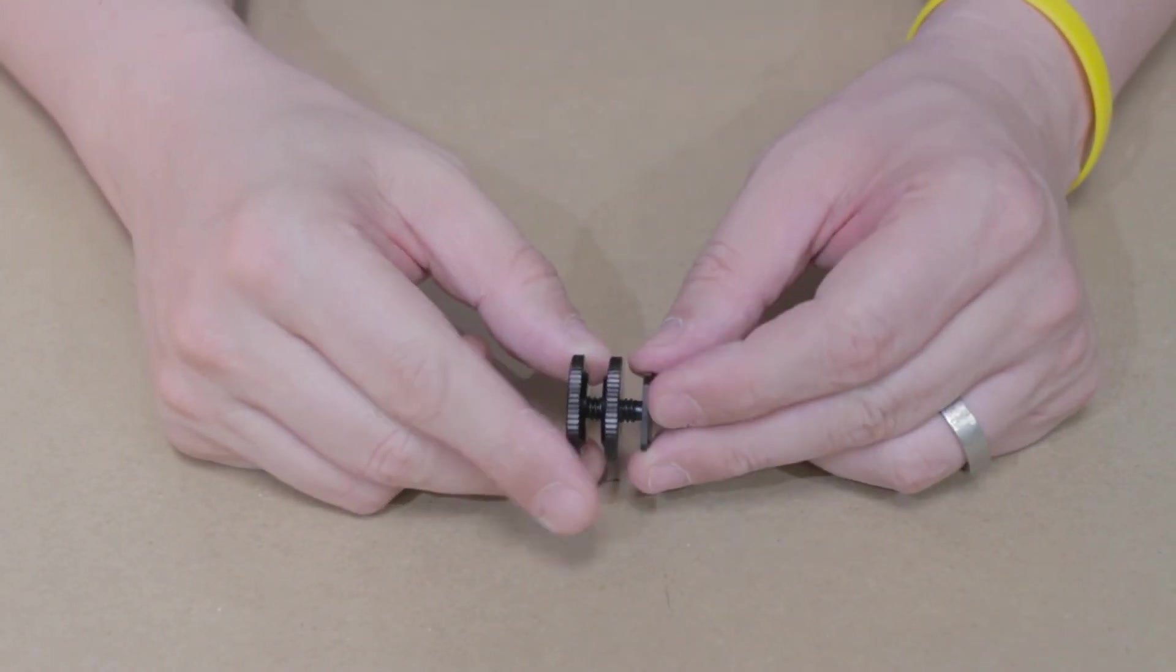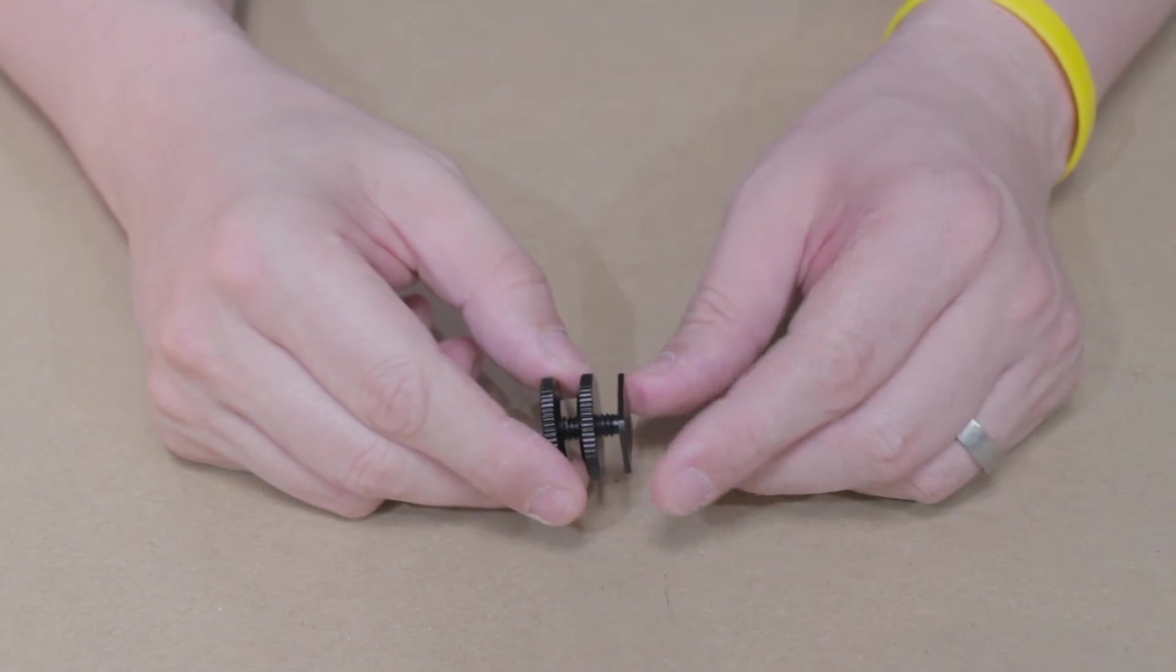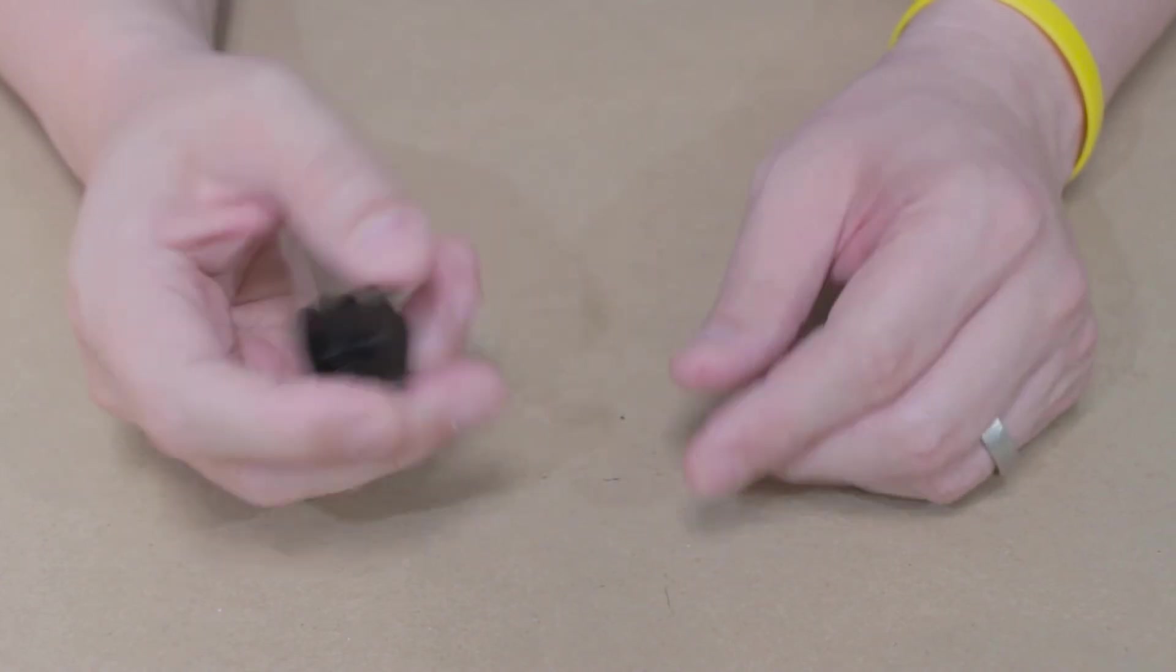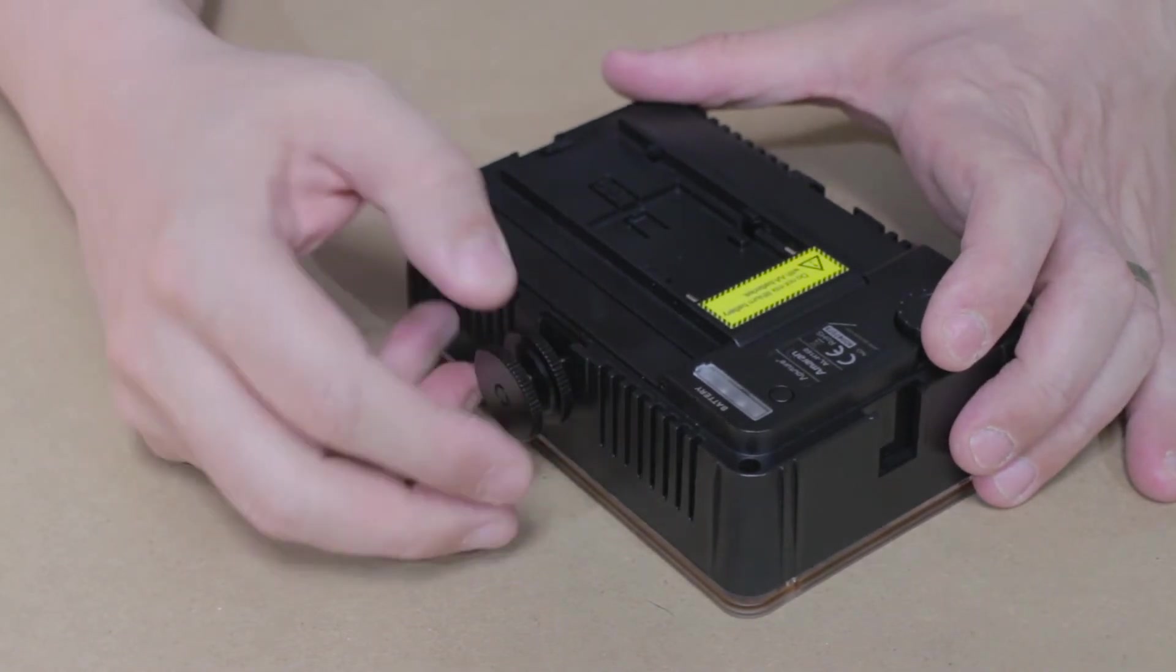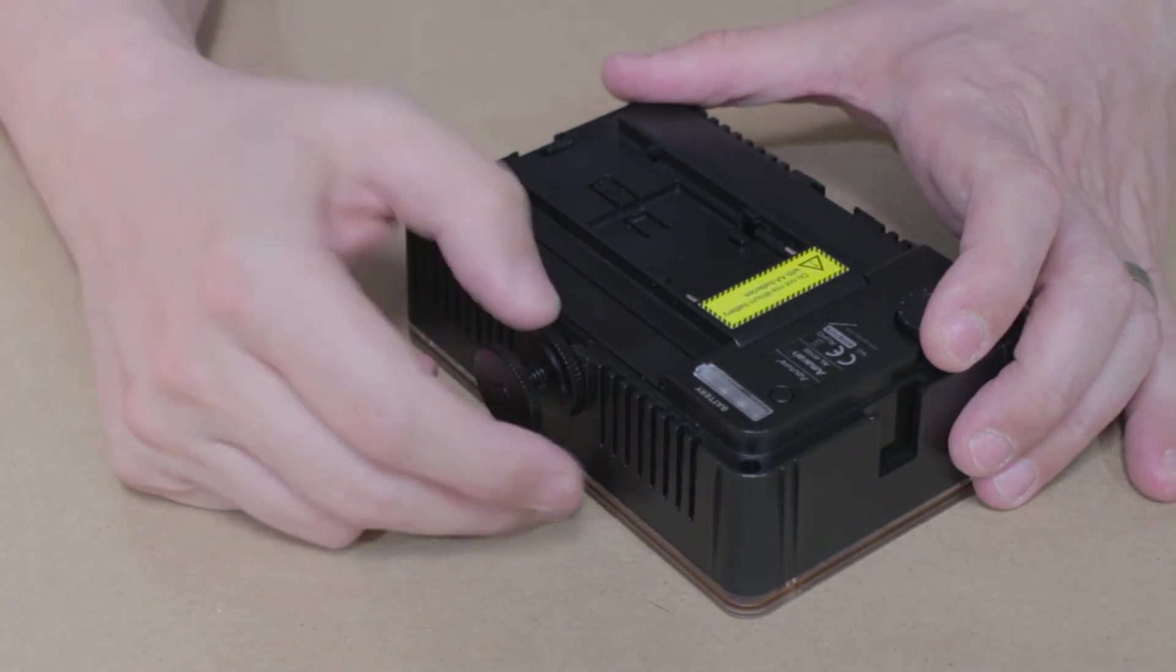This hot shoe adapter I got on eBay. I got 10 of them or something for a couple of bucks, they're cheap. This is the light, and the hot shoe adapter fits like that, and then you tighten it down.